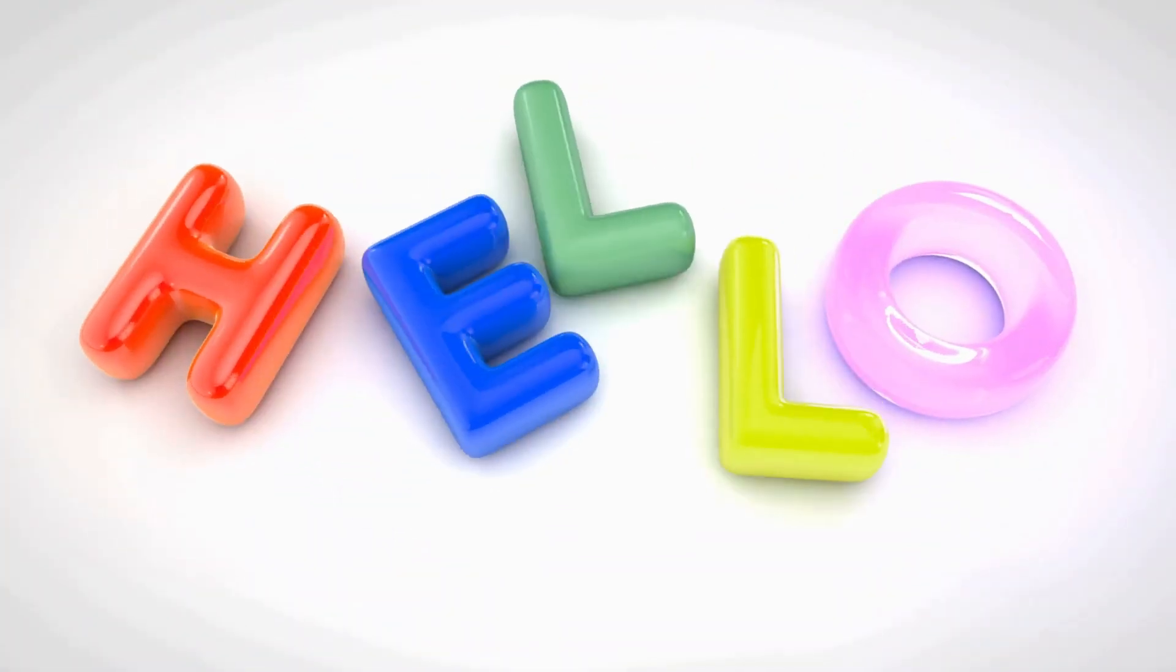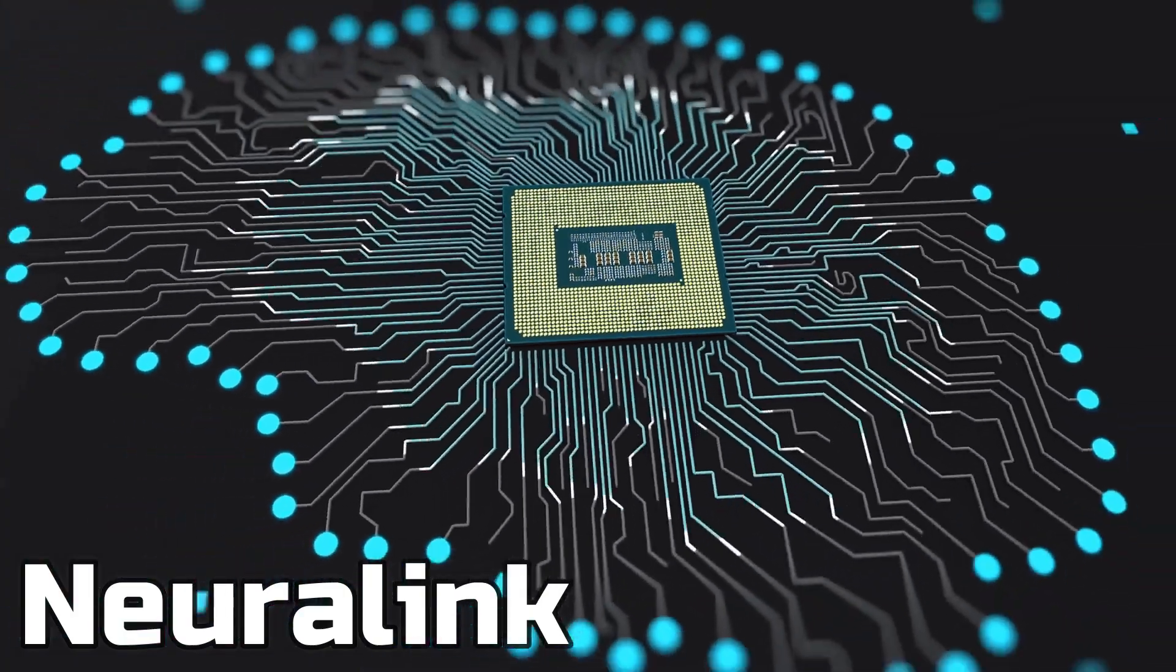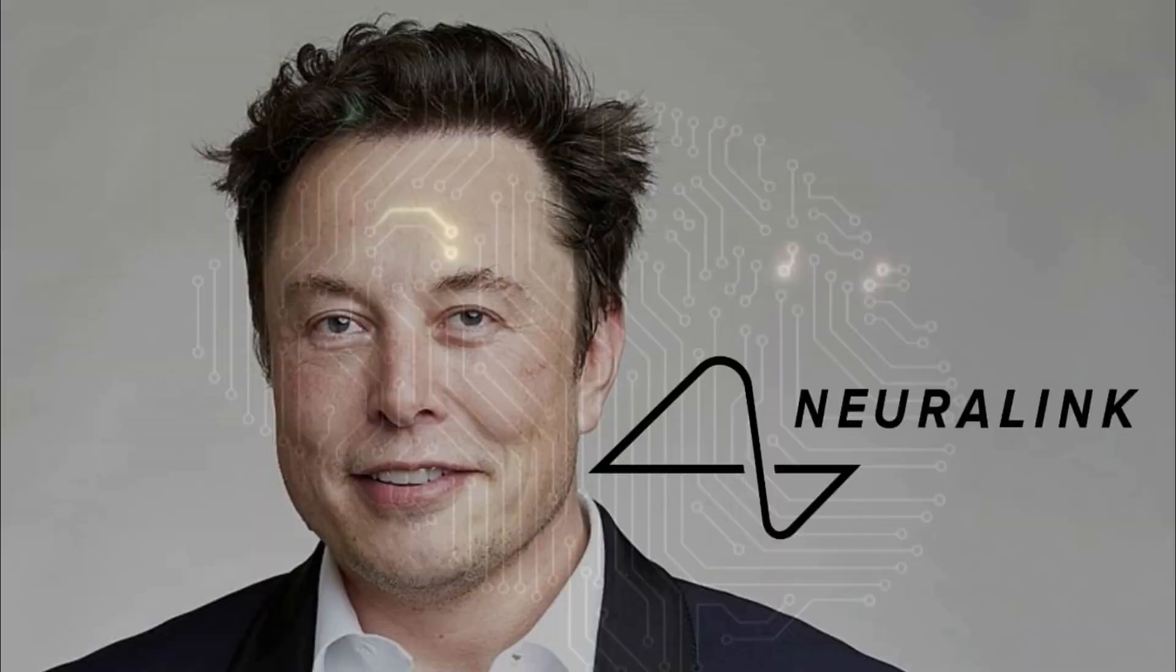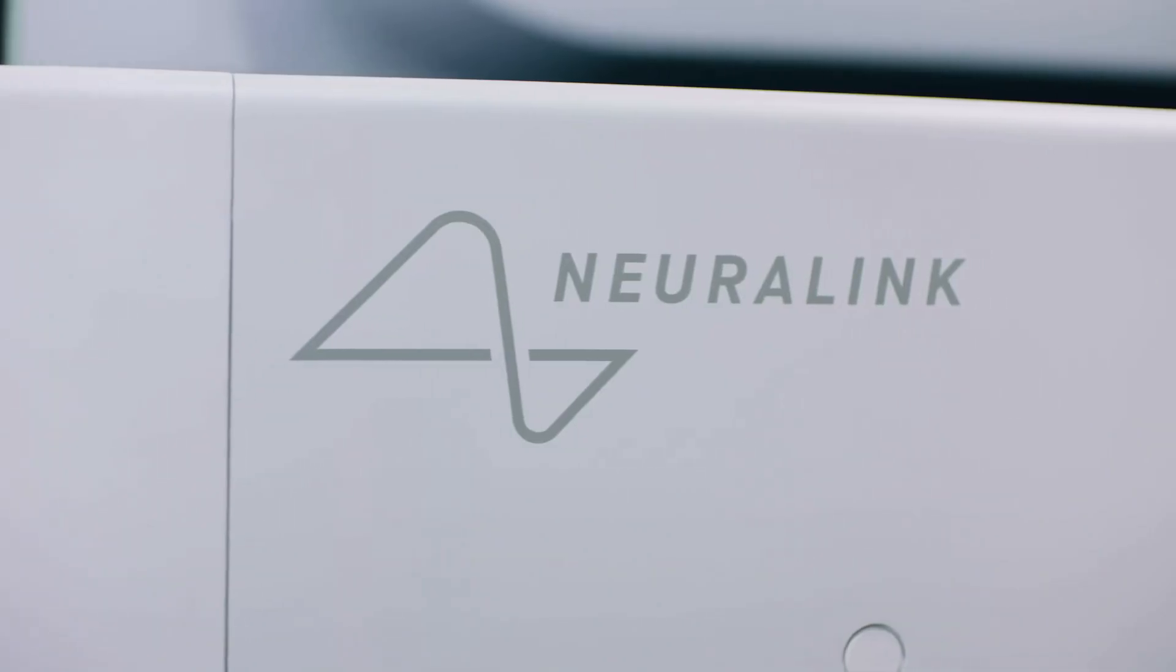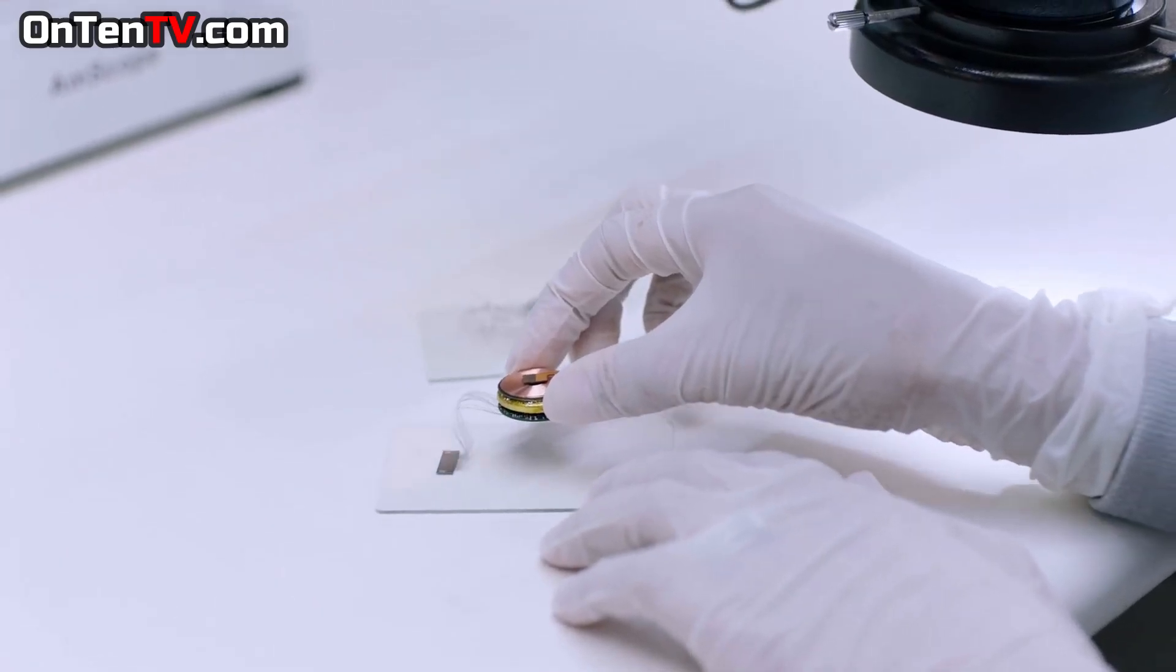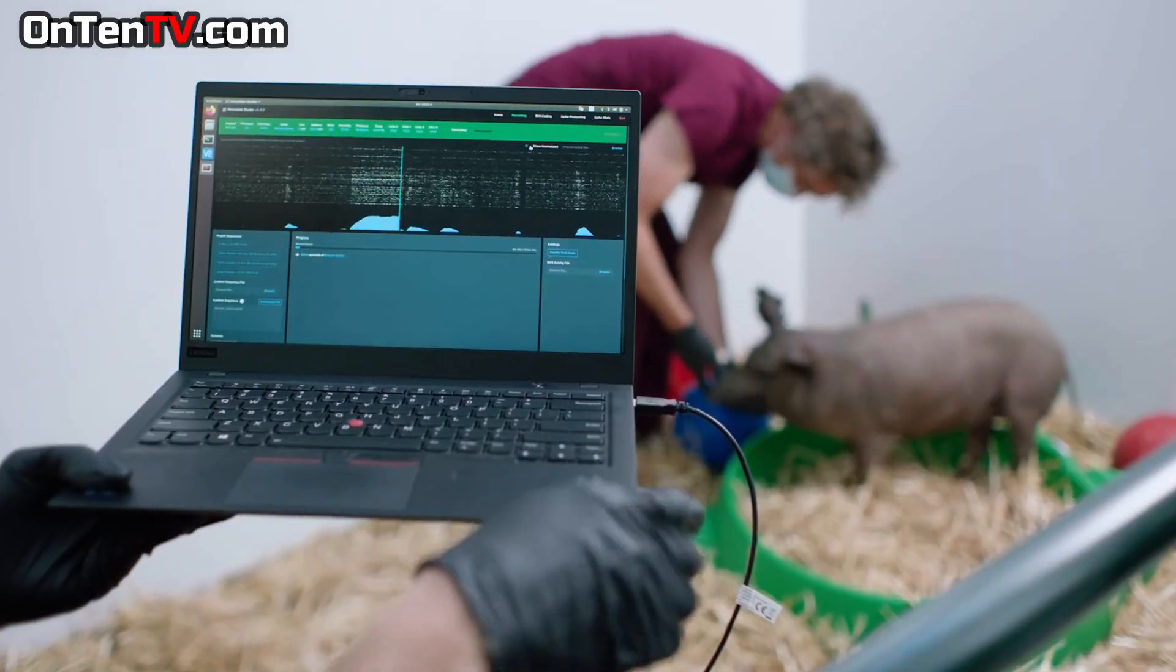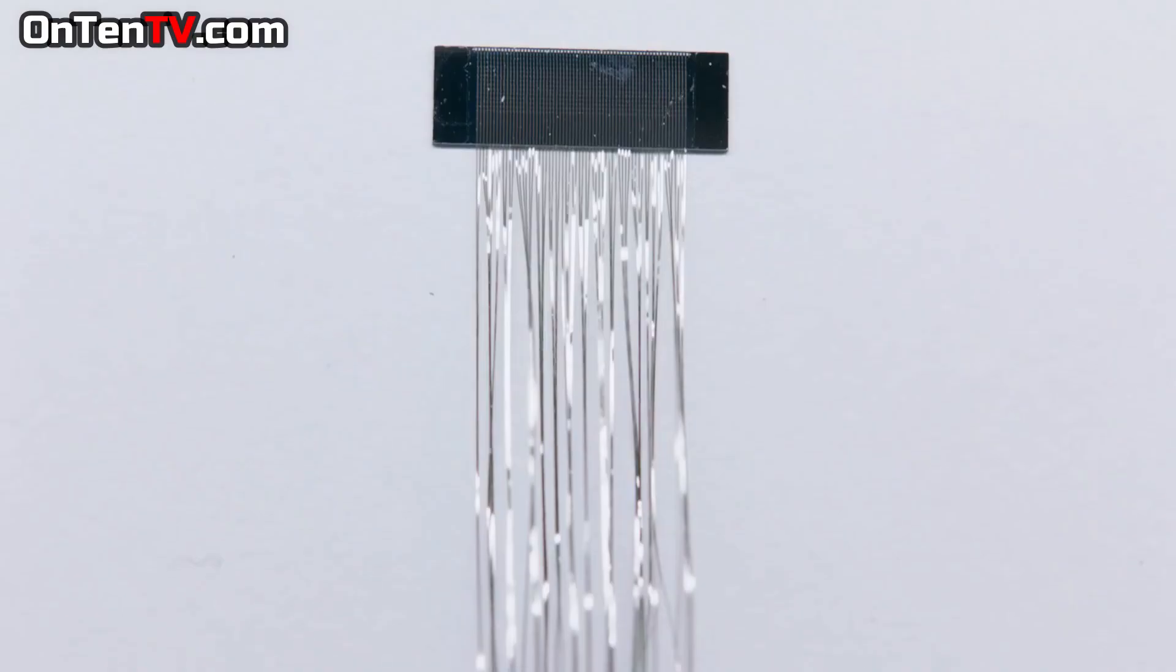What is up guys, have you ever heard of Neuralink? Neuralink is another company started by Elon Musk. Just like his other companies, Elon is trying to create a revolution in this department as well. In this company there is a lot of research going on to create a chip that could be fitted inside the human brain.